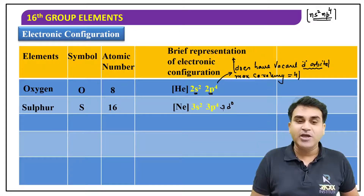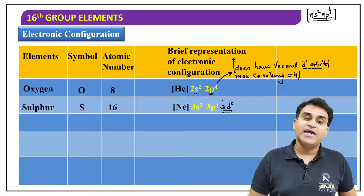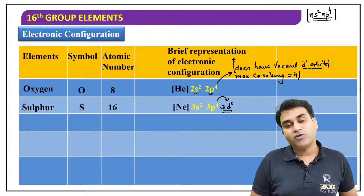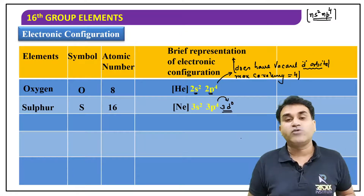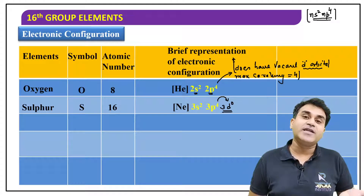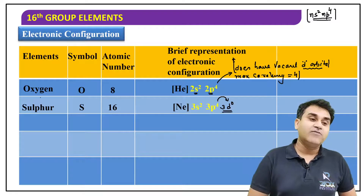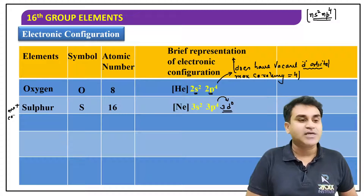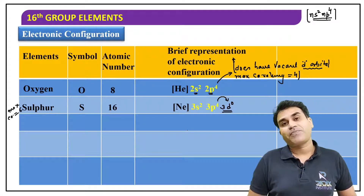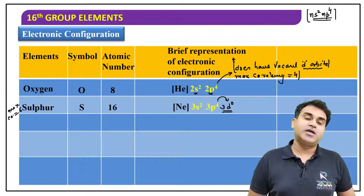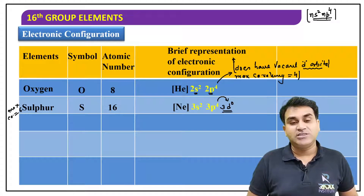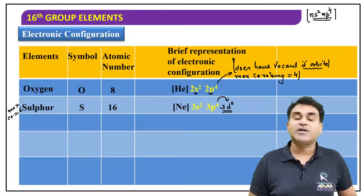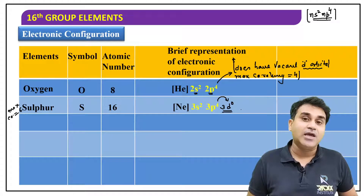For sulfur, d orbital is available. So by acquiring an excited state, it can transfer electrons to higher orbitals. If electrons are transferred to excited state, the number of unpaired electrons will increase, and covalency will also expand. So sulfur's maximum covalency — maximum number of bonds it can form — is 6, by the excited state concept. P electrons go to d, and then s electrons also move to d, so unpaired electrons increase and maximum covalency can be up to 6.